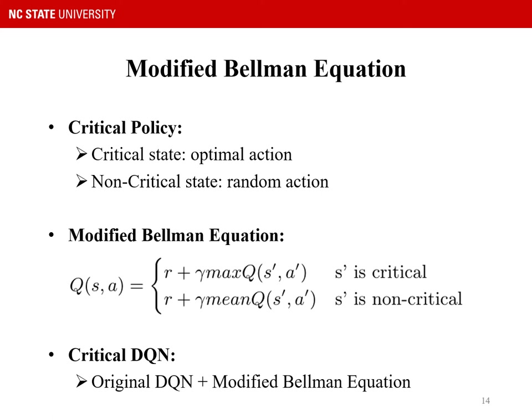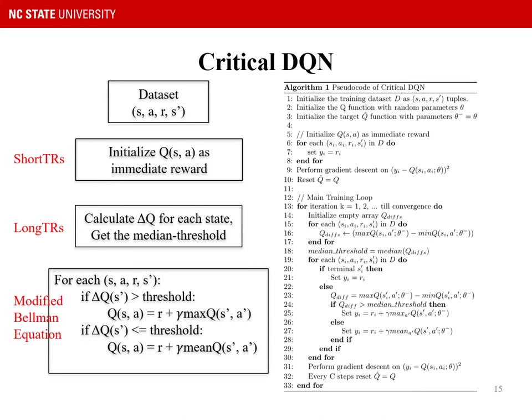In our modified Bellman equation, to account for the critical policy — where critical states take the optimal action and non-critical states can select any action — we split the original Bellman equation into two equations. For critical states, it follows the original Bellman equation. For non-critical states, it uses average Q values among all actions. We then propose a critical DQN which applies this modified Bellman equation in the original DQN. In the pseudo-code of critical DQN: first, we initialize Q values as the immediate reward; then we calculate the Q value difference for each state and get the median threshold to classify states as critical or non-critical; finally, we apply the modified Bellman equation to update the neural network.